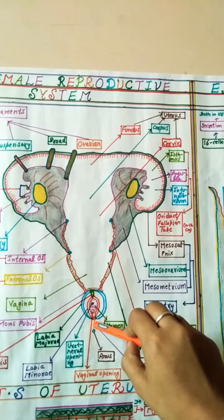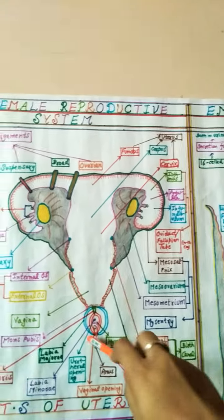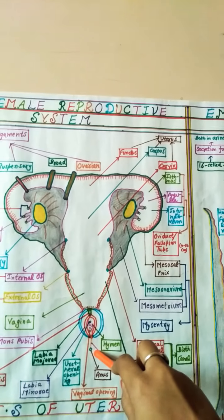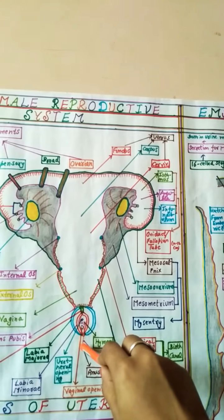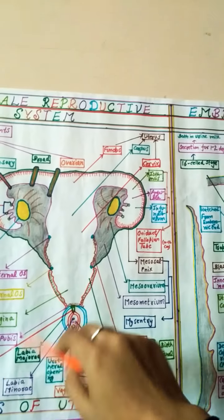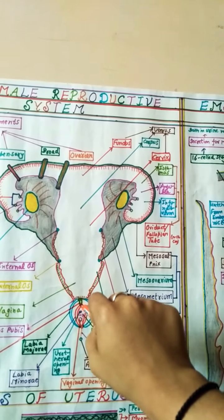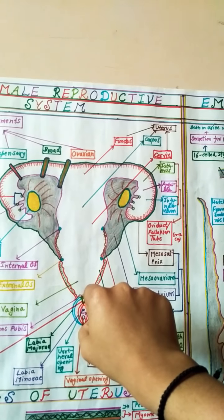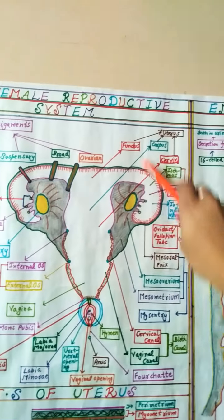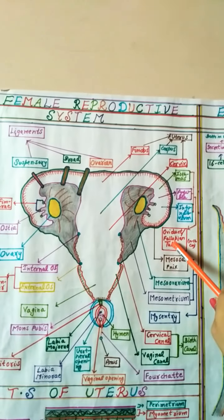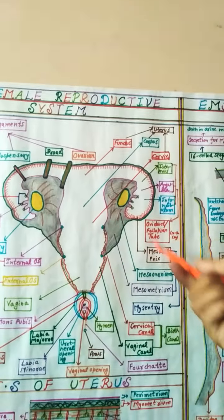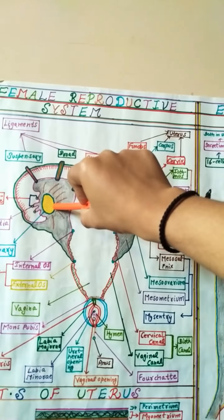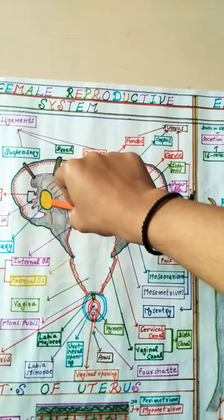The fourchette is also called the frenulum, where the labia minora meets posteriorly. The clitoris is present dorsally inside the female reproductive system. This covers all the external female reproductive structures.